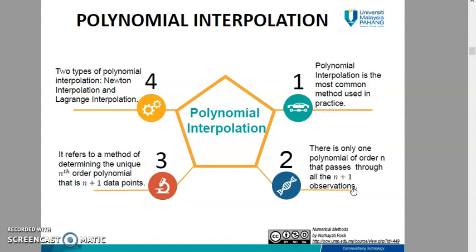For instance, if two data points are connected, there is a unique polynomial of order 1 that passes through the data points. And this polynomial is called linear polynomial.